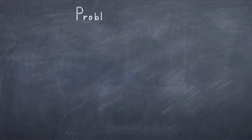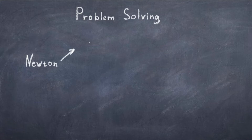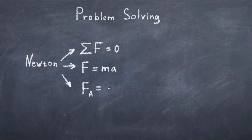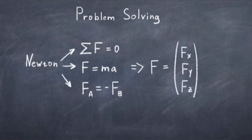When solving problems in physics there are often different ways to approach a problem. In many cases good results can easily be obtained using Newton's formalism with Newton's laws. As discussed in the previous videos, some quantities are vectors and some are scalars. Forces are vectors, so when solving a problem with Newton's laws one needs to be careful about how to define the coordinate system and keep track of force components in different directions. Because of this vector nature of the Newtonian formalism, many problems can become unnecessarily difficult. This is why the so-called Lagrangian formalism is very powerful, as it does not work with vectors in this way, and many problems which are complicated in the Newtonian formalism can easily be solved using the Lagrangian formalism.